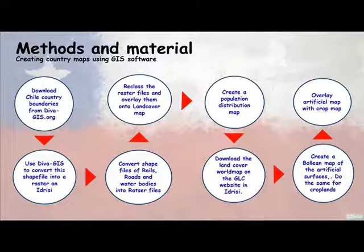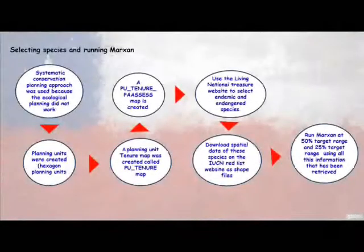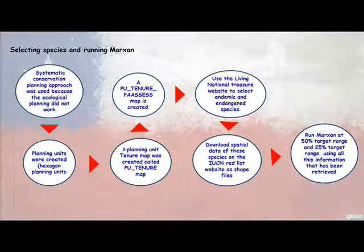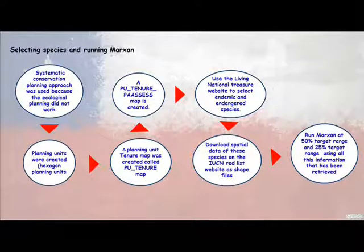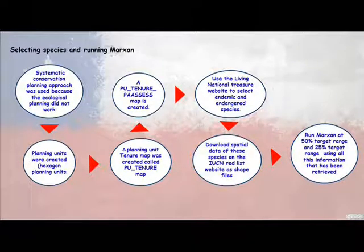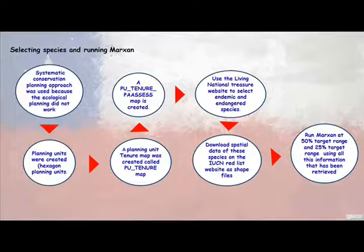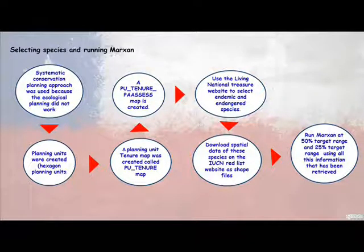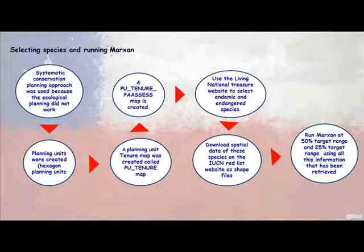A systematic approach was used to build the conservation plan of Chile using hexagons as conservation planning units. Admin Zero was imported into Arcview. Open extensions on Arcview and create a hexagon. A 10-year passes map is created. Use the Living National Treasure website to select endemic and endangered species, and download spatial data on these species from the IUCN Red List website as shapefiles. Run Marxan at 50% target range and 25% target range using all this information. For detailed methods of running Marxan, please follow the steps in the Marxan tutorial handbook.